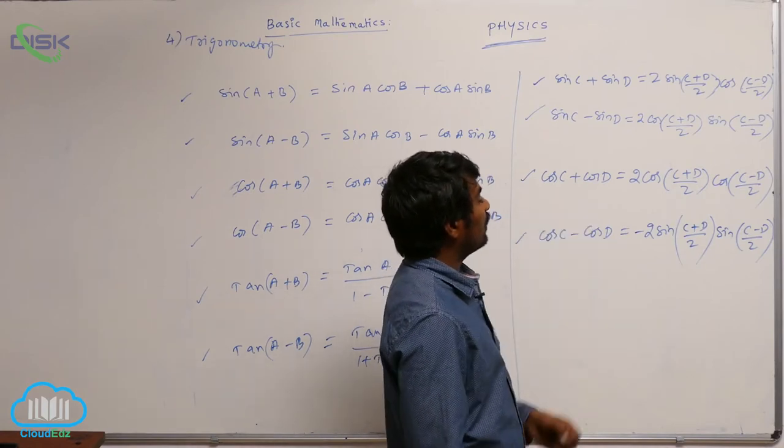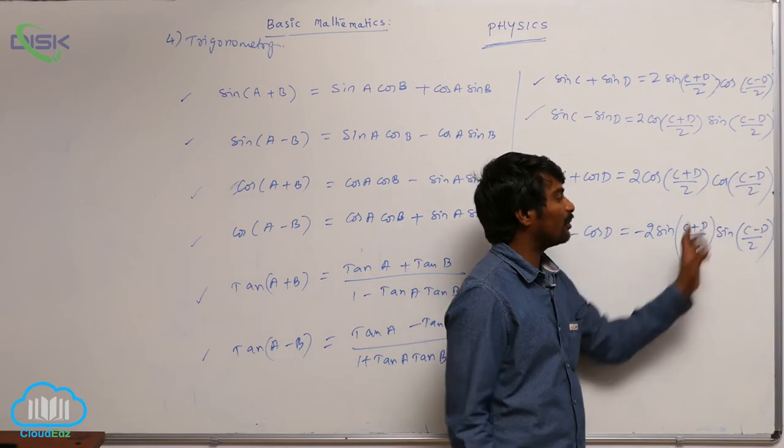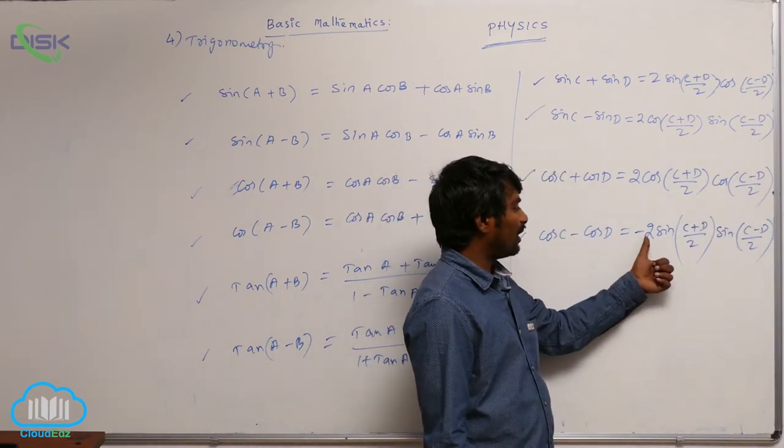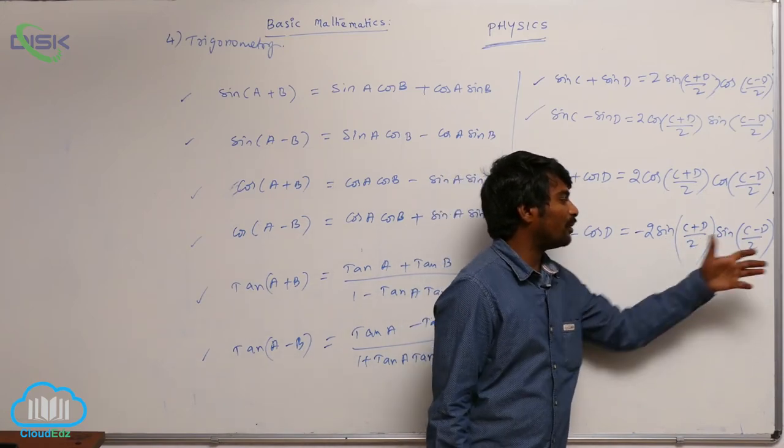cos c + cos d = 2 cos((c + d)/2) cos((c - d)/2). cos c - cos d = -2 sin((c + d)/2) sin((c - d)/2).